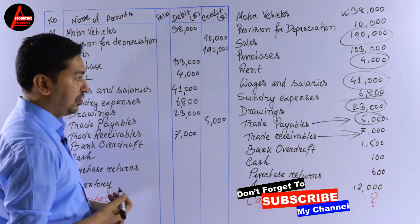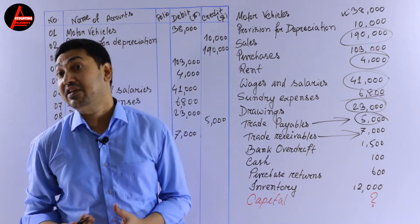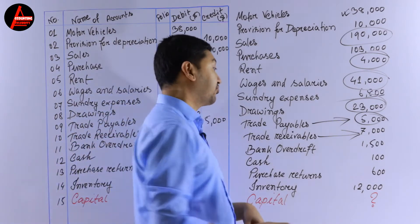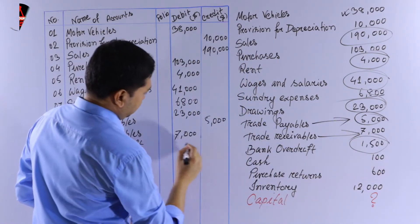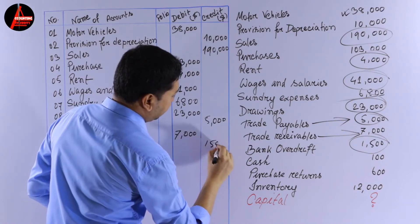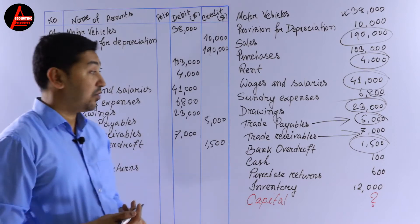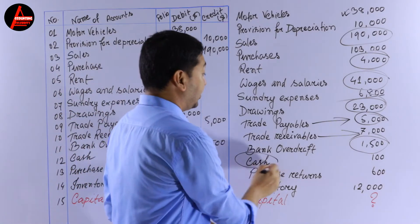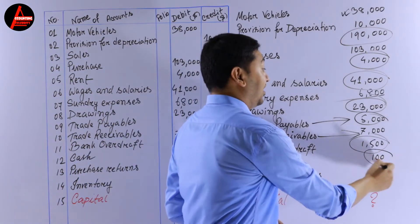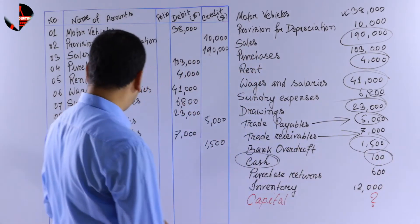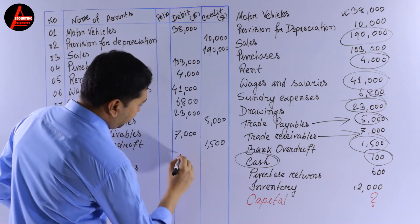Next we have bank overdraft — it's a liability, so it comes on the credit side: 1,500 dollars on the credit column. Next is cash — cash is a current asset and it will be debited: 100 dollars on the debit column.